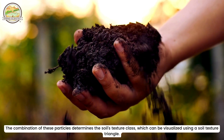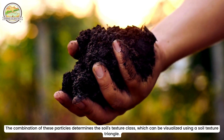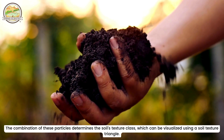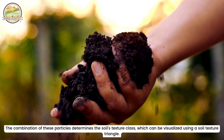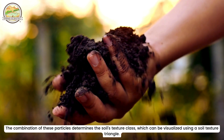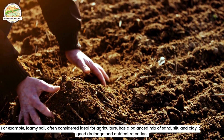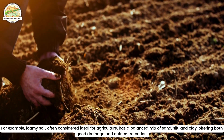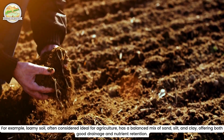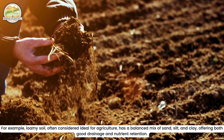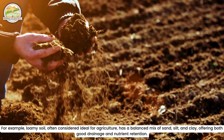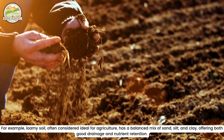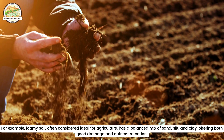The combination of these particles determines the soil's texture class, which can be visualized using a soil texture triangle. For example, loamy soil, often considered ideal for agriculture, has a balanced mix of sand, silt, and clay, offering both good drainage and nutrient retention.